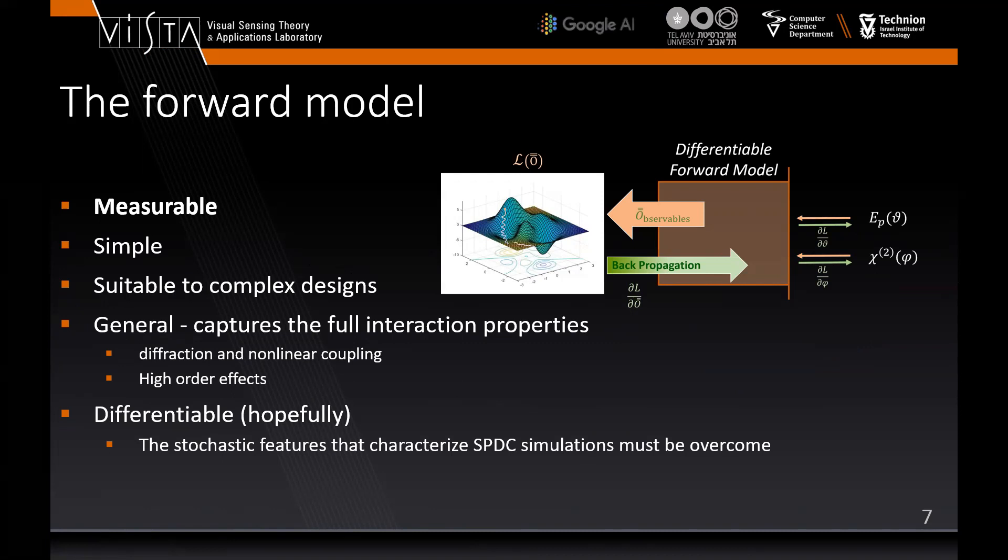Selecting the right forward model is crucial and we wish to have the following properties. It should provide us with an observable quantity that fully describes the physical process. It should be well understood for validating the results and it should be modular. It should be suitable for complex design and capture the entire solution space, such as diffraction and high-order effects. Hopefully it should be differentiable, which will allow us to use the most recent learning methods on our problem. This process is stochastic, making it a hard task.